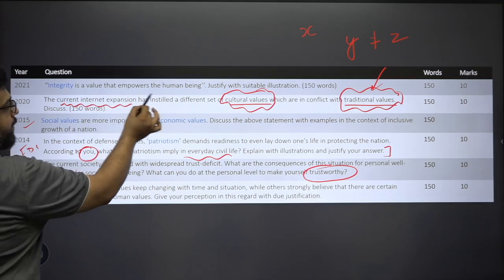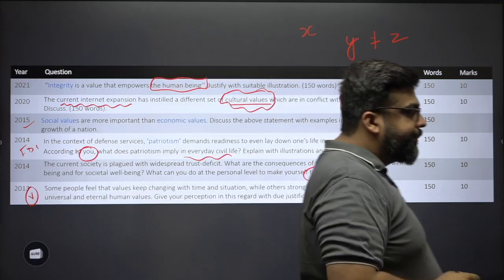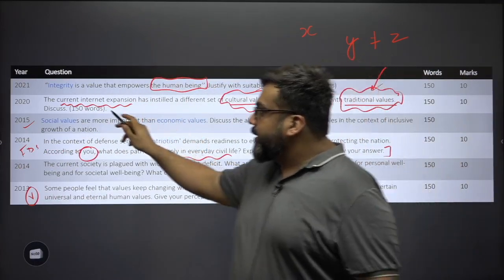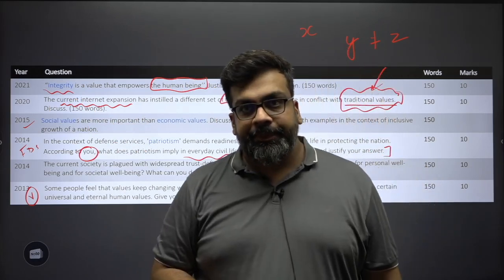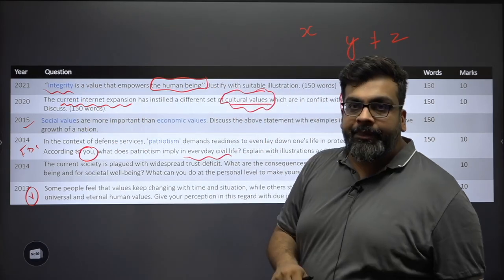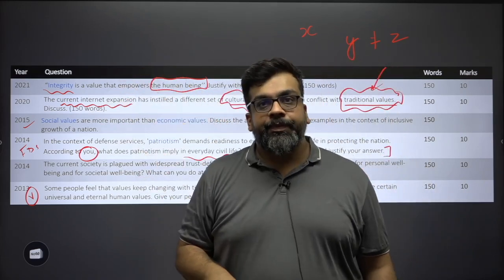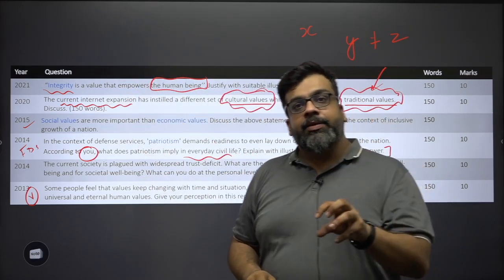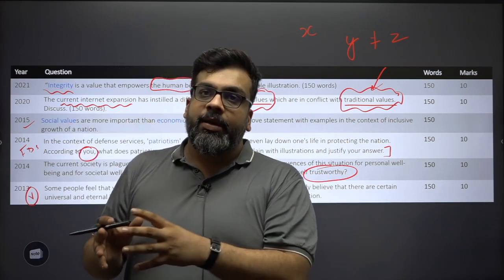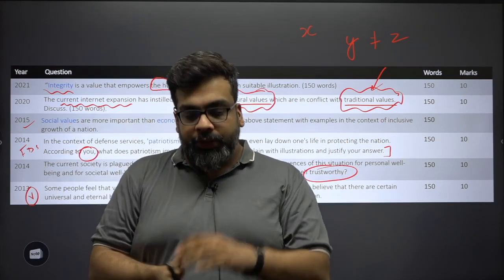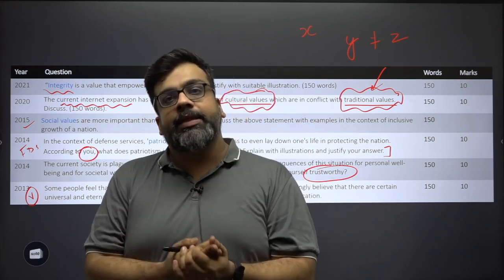The 2021 question states: 'Integrity is a value that empowers the human being. Justify with a suitable illustration.' Integrity is categorically mentioned in the syllabus as a foundational value for civil servants, but in 2021 it was asked in terms of how important it is for a human being. This means common values foundational to civil services that are also applicable to betterment of human life must be studied in that perspective. Whether or not you are a civil servant, we should all have a degree of integrity and a degree of empathy.